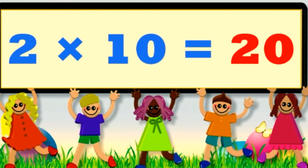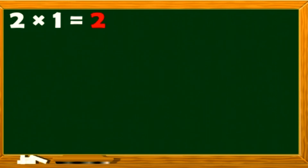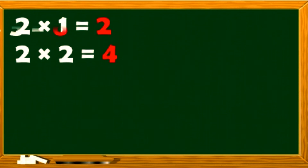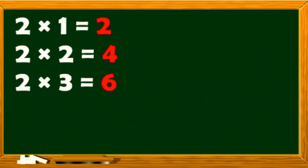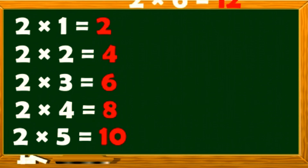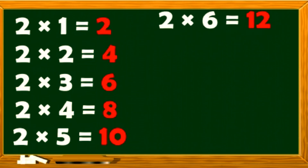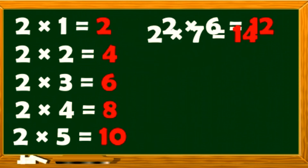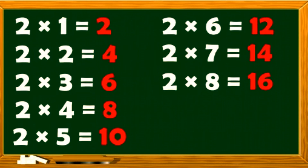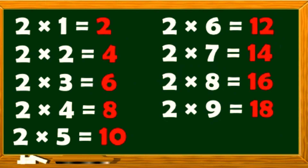Let's do it one more time. 2 1s are 2. 2 2s are 4. 2 3s are 6. 2 4s are 8. 2 5s are 10. 2 6s are 12. 2 7s are 14. 2 8s are 16. 2 9s are 18. 2 10s are 20.